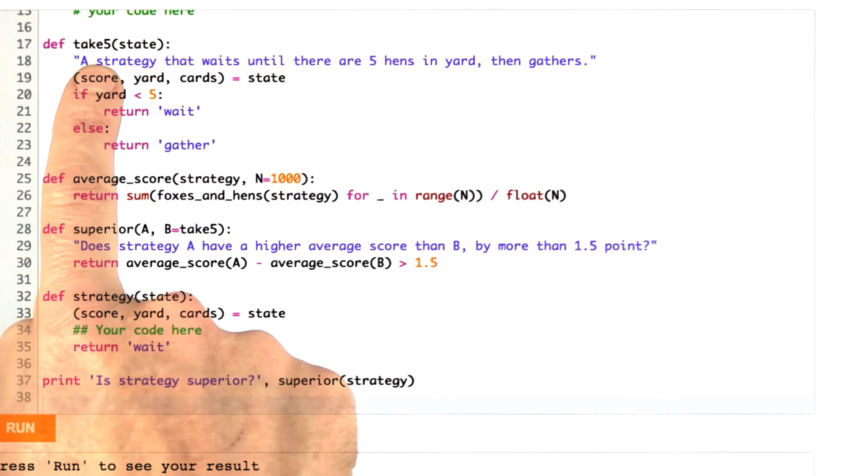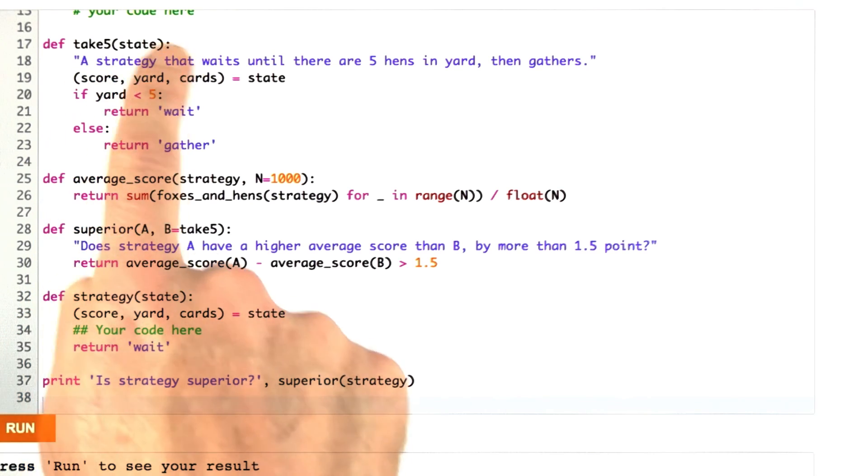Now I've given you a sample strategy for playing the game. I call this strategy take 5. I wrote this function. There's no truth to the rumor that Paul Desmond and Dave Brubeck wrote it. And the way it works is it waits until there are five hens in the yard, and then it gathers them up.